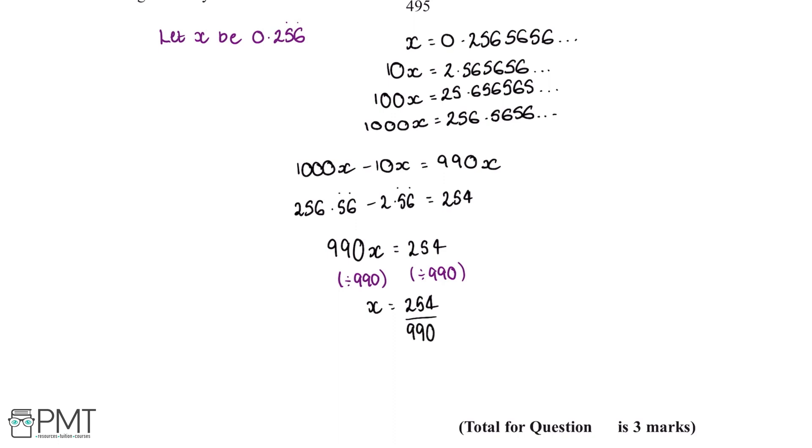And now the final thing we need to do is simplify down this fraction. And to do this we can divide both the numerator and the denominator by 2, and this gives us a final fraction of 127 over 495.